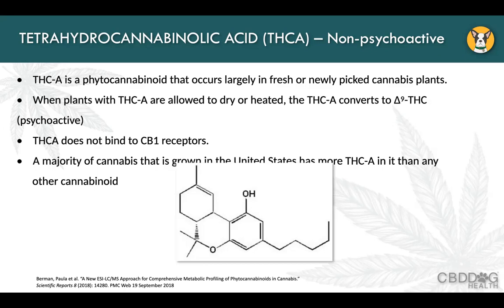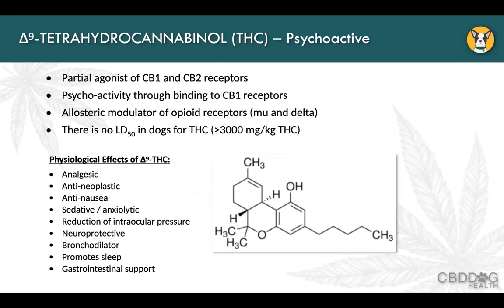People are looking at marijuana microgreens so you can get THCA in a stable form — you would add it to a juice or eat it fresh. Delta-9-THC is the psychoactive form and it is a partial agonist, meaning it partially binds to CB1 and CB2 receptors. Its psychoactive effects are on the CB1 receptors. Interestingly, there is no LD50 — no lethal dose for 50 percent of subjects has been found — even at more than 3,000 milligrams per kilogram of body weight.